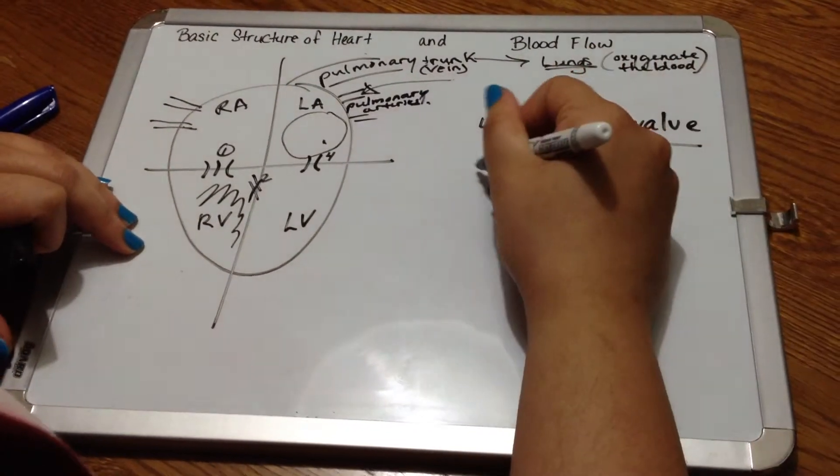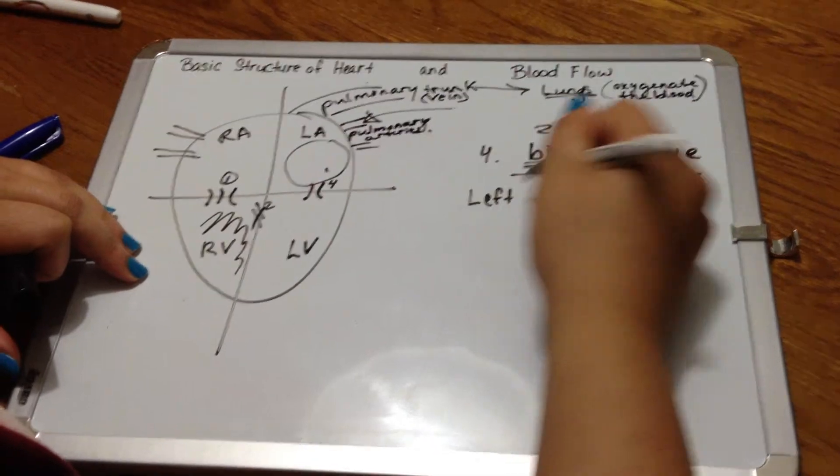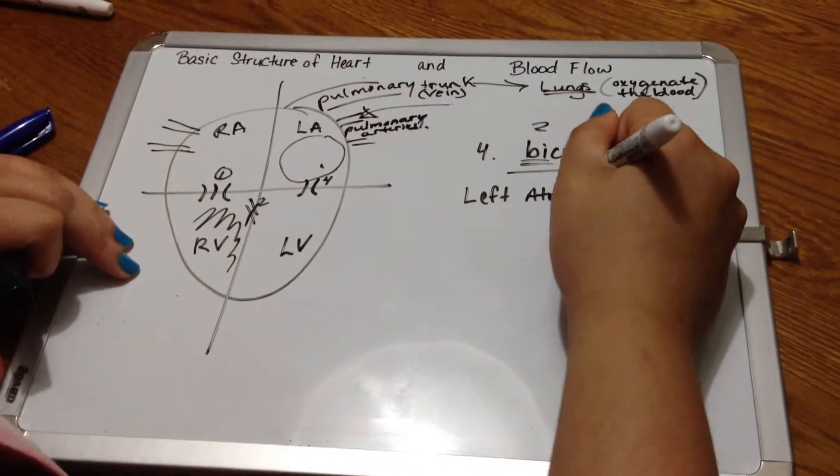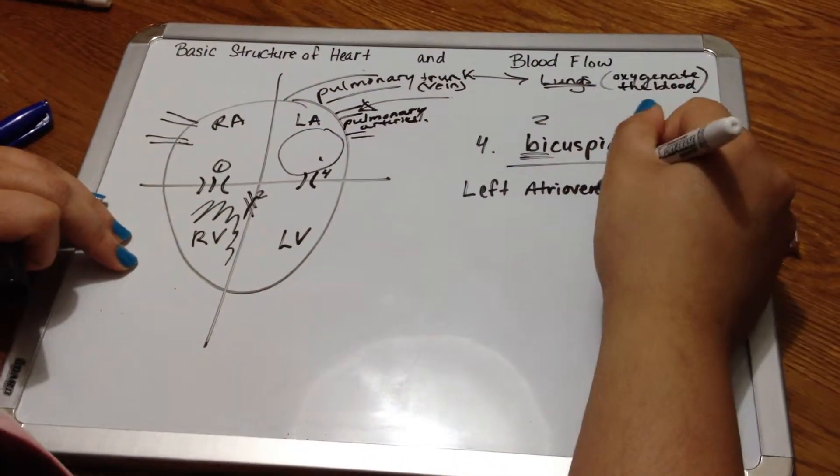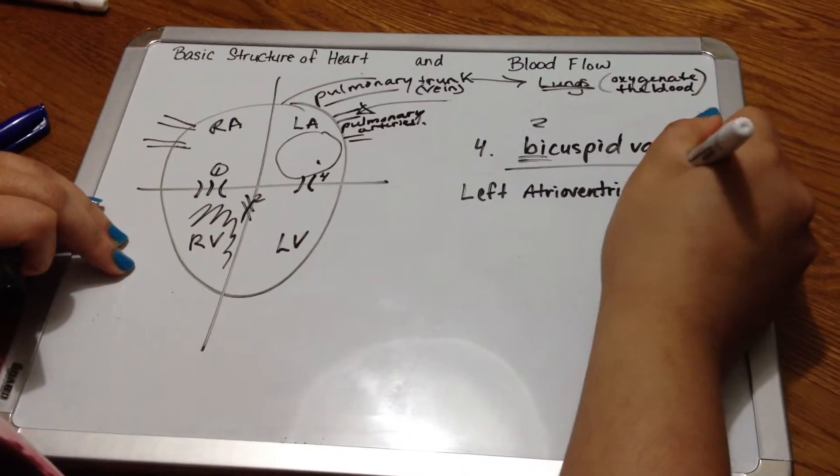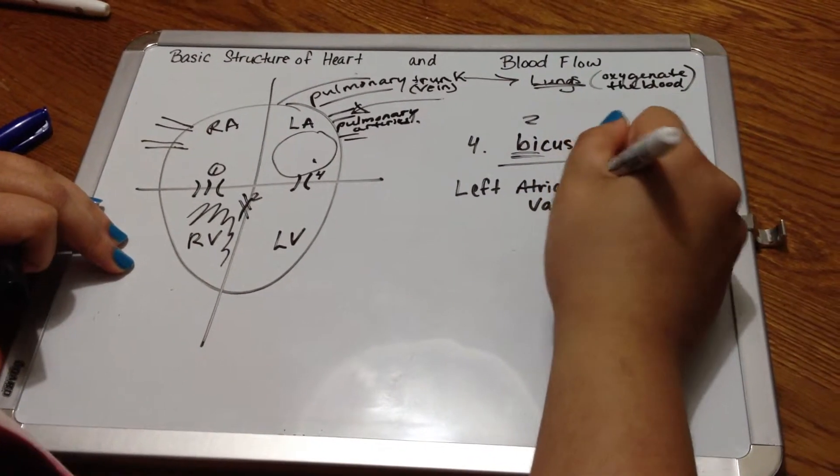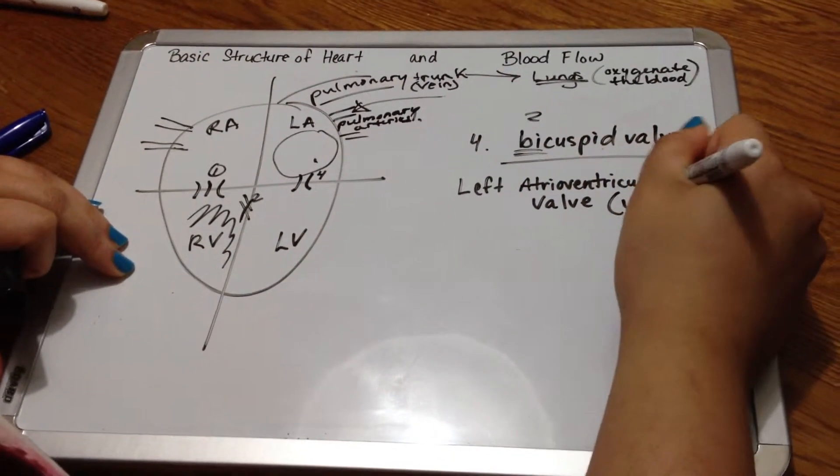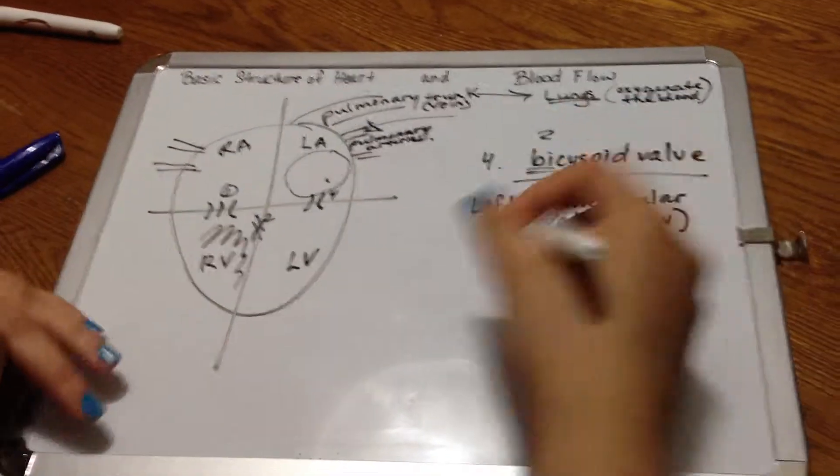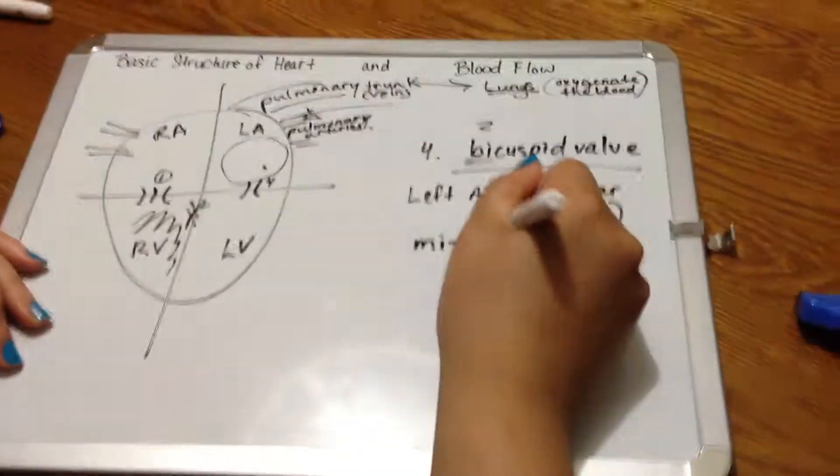The bicuspid valve is one of the names. The second most common name is left atrial ventricular valve. Once again, a big mouthful, ventricular valve. L-A-V is the abbreviation, and it has also a third name. It's called the mitral valve.